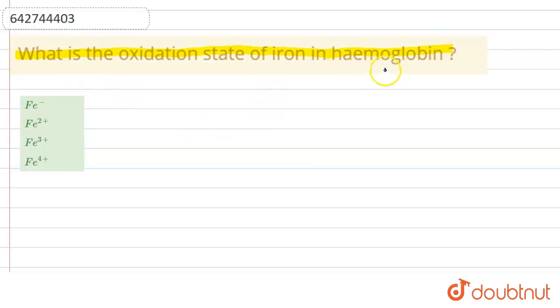If we talk about hemoglobin, hemoglobin is actually the blood pigment. The blood has hemoglobin, and the blood is red due to the presence of hemoglobin.